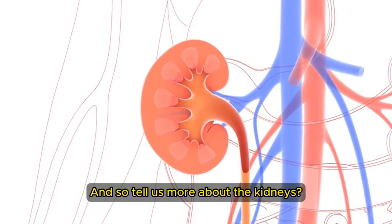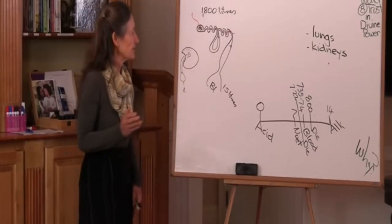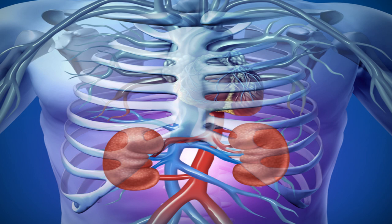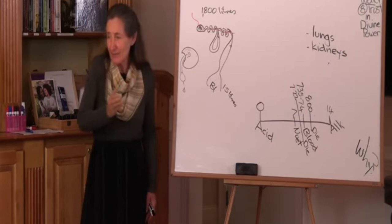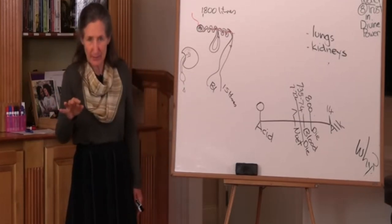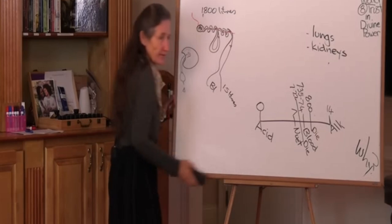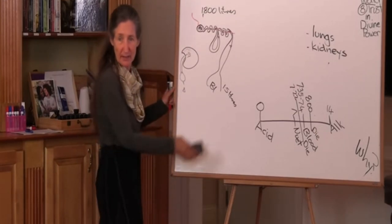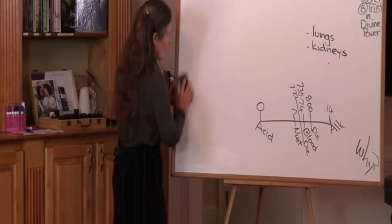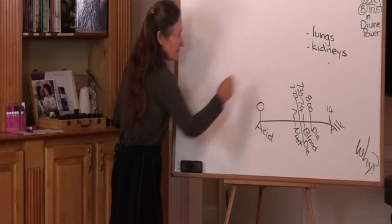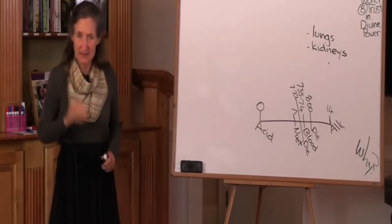And so tell us more about the kidneys. So you can see that the kidneys not only filter the blood, they play an important role in what's called homeostasis, in balancing the body, in balancing the pH, in balancing the sodium and water balance in the body, in balancing blood pressure. I don't think you'll ever look at your kidneys the same again, will you? You can see why the kidneys are the other organ that help to balance the pH.